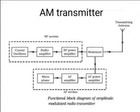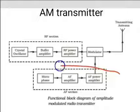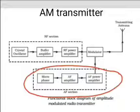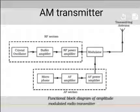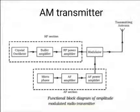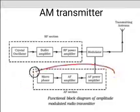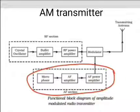This is the block diagram of AM transmitter. It consists of two sections. The first one is the audio frequency section, that means the AF section. And the second section is the radio frequency section, that means the RF section. In the AF section, this section of a transmitter generates the modulating signal.